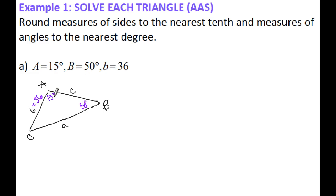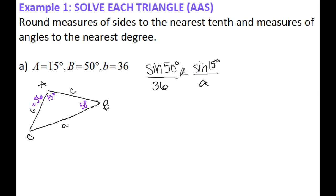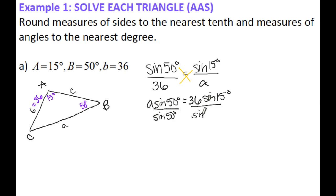I can use angle B and side B to set up the first ratio: sine of 50 degrees over 36. The other angle I have is A, which is 15 degrees, so I'll use that to solve for side A. Cross-multiplying gives me A times sine of 50 equals 36 times sine of 15. Dividing both sides by sine of 50 and plugging into the calculator — 36 sine of 15 divided by sine of 50 — gives me 12.2. Sides are rounded to the nearest tenth.